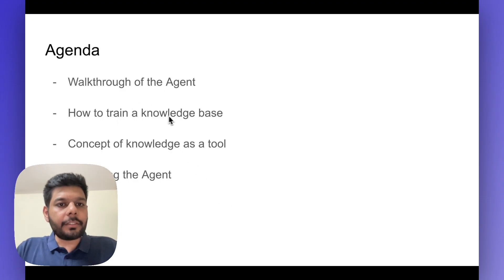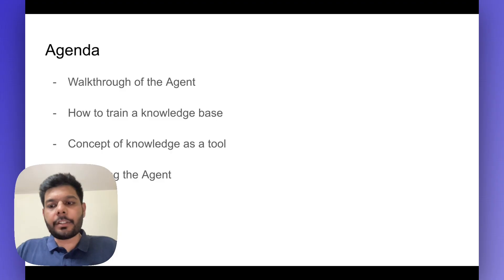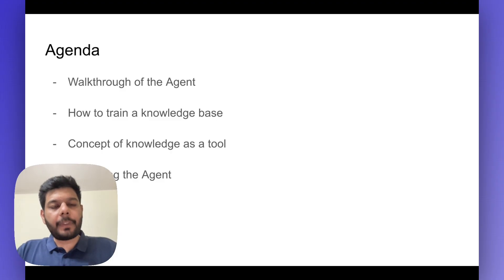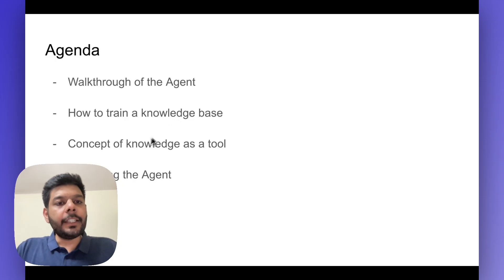The second step is going to be how to train a knowledge base — what are the different options available, what are the different loaders as we call them. A website is a loader, PDF documentation is a loader, CSV files could be a loader as well.